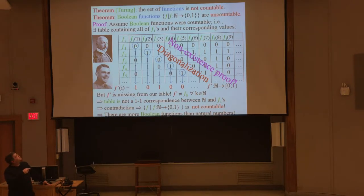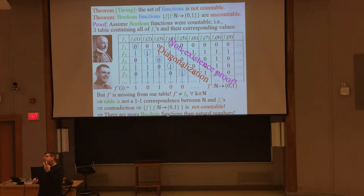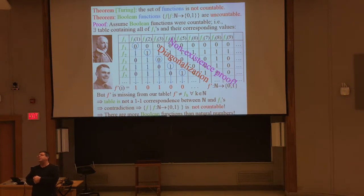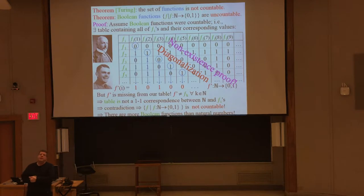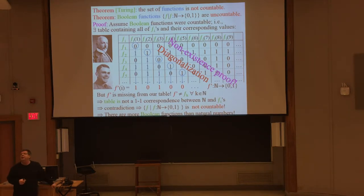A student asks: what if the domain is finite? If the domain was finite and the function can only operate on, say, four things, there would only be finitely many boolean functions on those things — not just countably many, but finitely many. But most interesting domains are not finite — the integers, natural numbers, rationals, complex numbers, reals: none of those are finite. You don't usually want a function that operates on just a couple of things; the interesting functions operate on infinite domains.